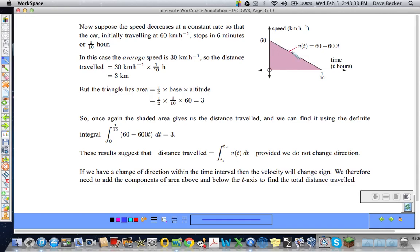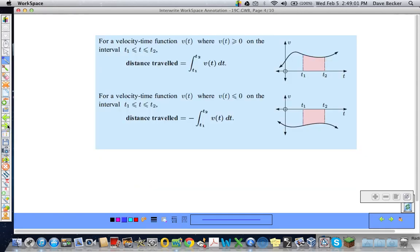If the velocity is constantly decreasing, same thing. We can graph it here. We can find the area of this triangle. This was for six minutes, which is one-tenth of an hour. So the area would be one-half times base times height, or one-half times one-tenth times 60, which is three, which is the same result as the integral from 0 to one-tenth of 60 minus 600T, which is the function that models this particular velocity. So those are things we know, area under a curve.